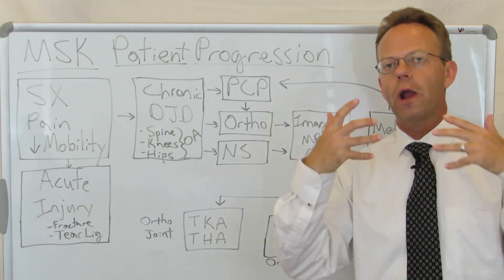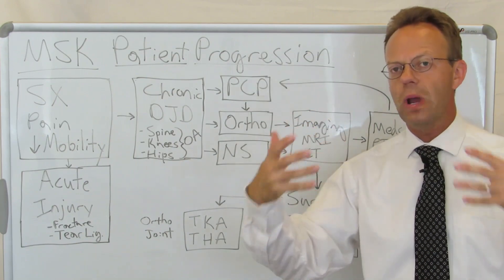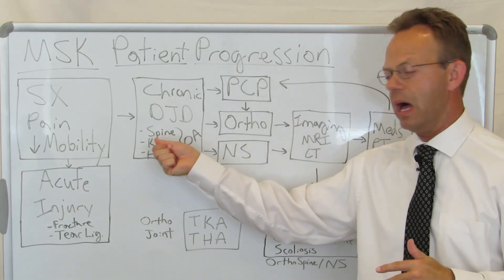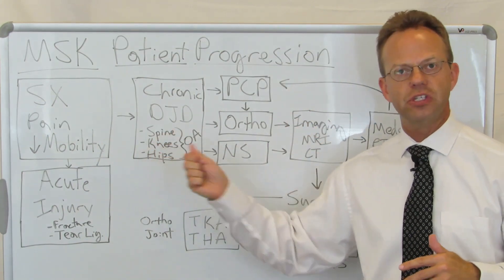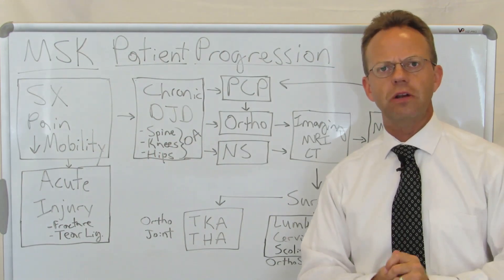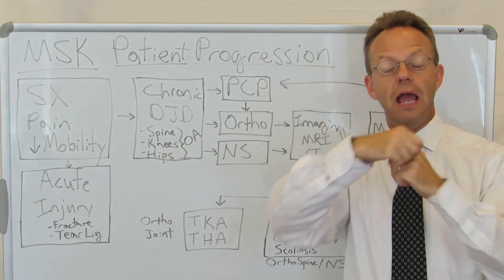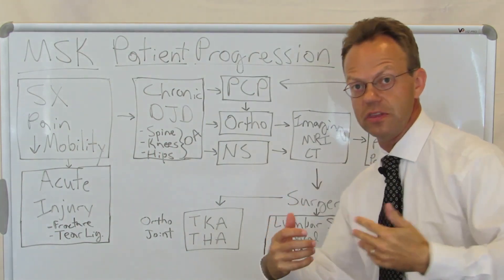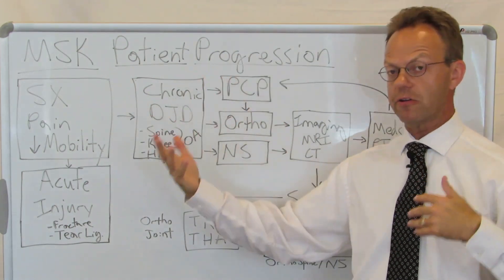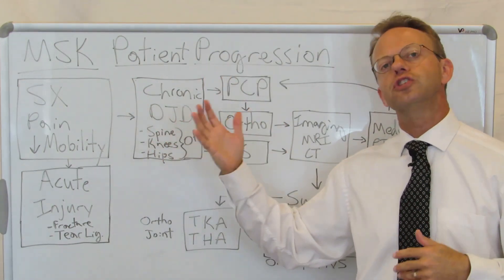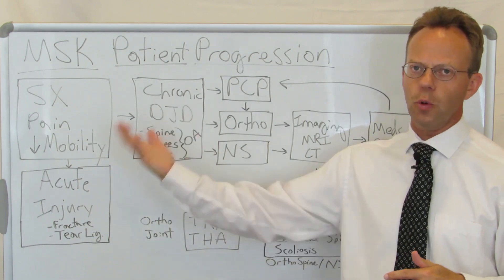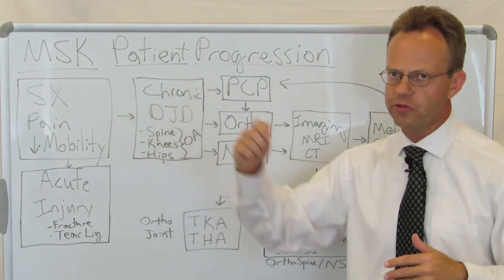Where does DJD typically happen? It happens in the weight-bearing joints: the spine, the knees, and the hips. The spine is actually a joint because you have all these vertebrae and your spine obviously moves and bears weight. So your spine is actually a huge weight-bearing joint, or multiple joints.